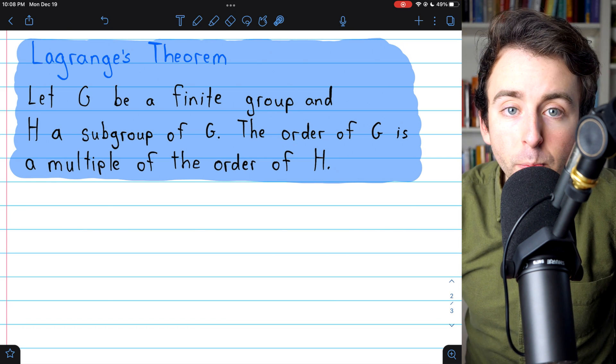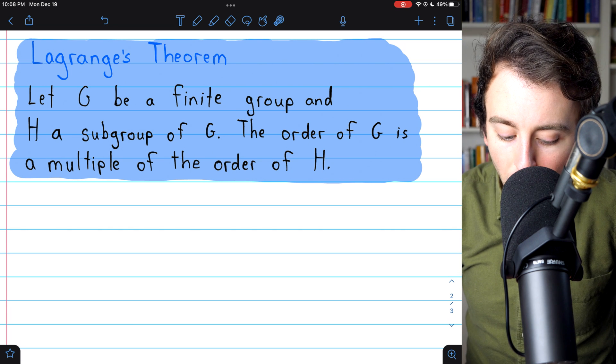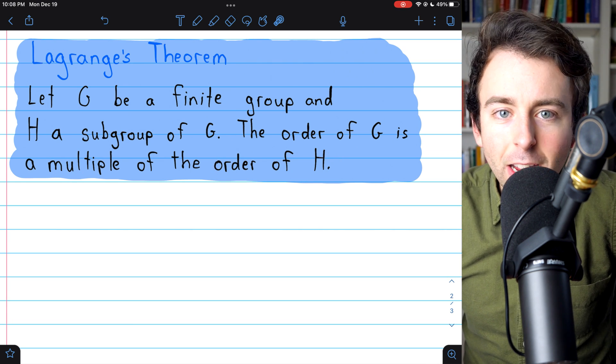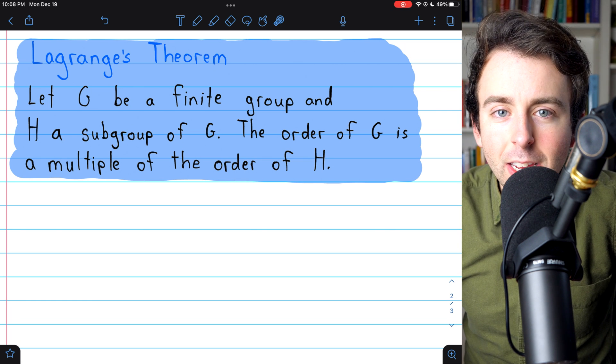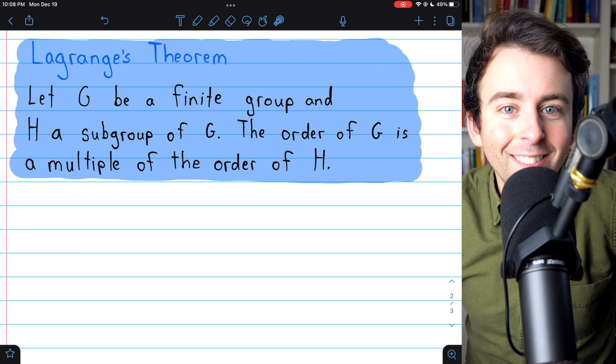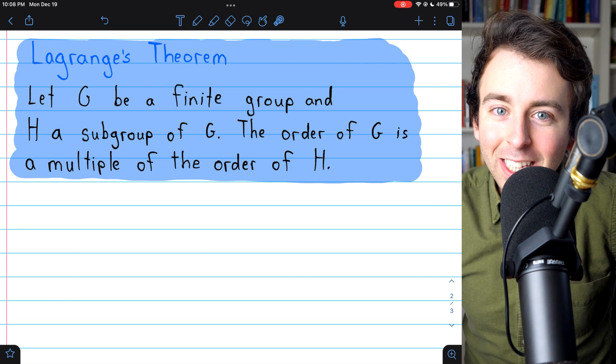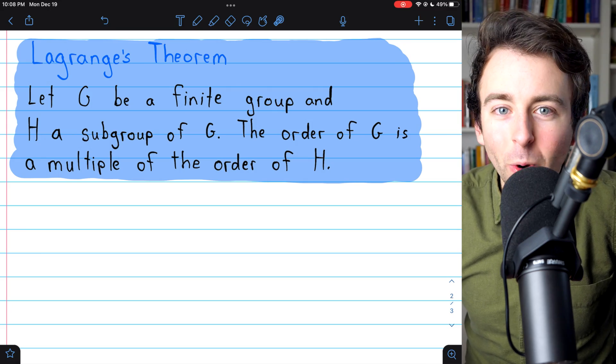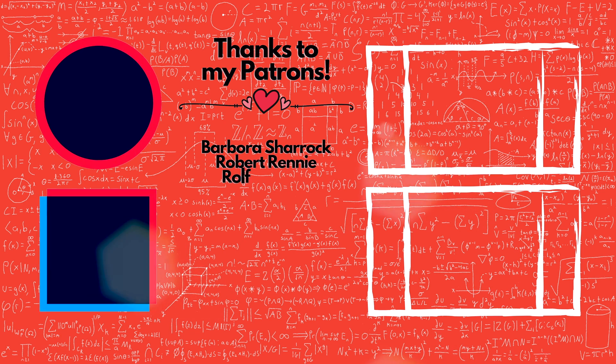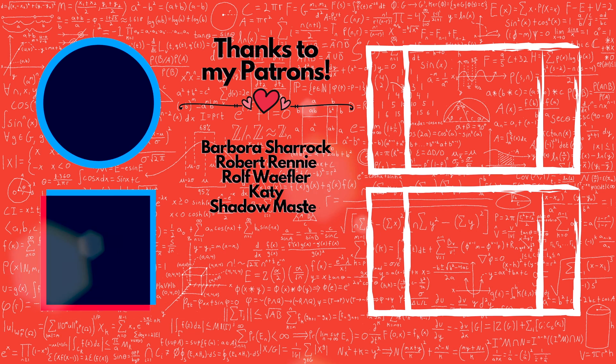the order of the group G, its number of elements, will be a multiple of the order of the subgroup H. Any subgroup of a group G will have to have an order that is a factor of the containing group. Really cool theorem, and we'll go into this in more detail next time. Thank you.